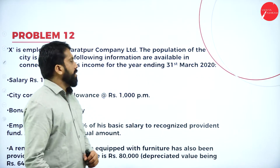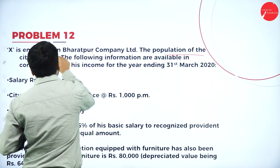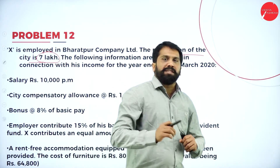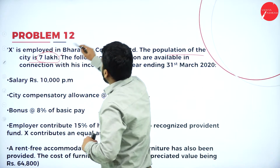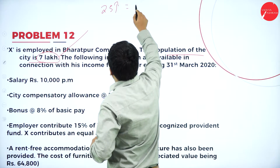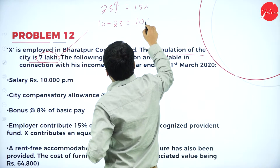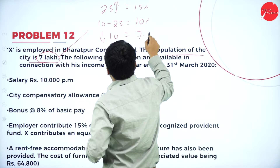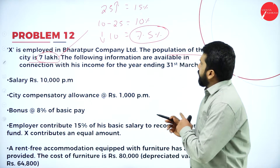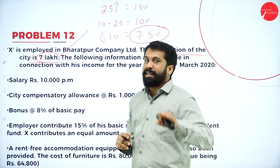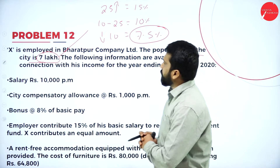X is an employee, employed in Bharatpur Company Limited. The population of the city is 7 lakh. If the population is 7 lakh, the calculation is: 25 lakh and above — 15%; 10 lakh to 25 lakh — 10%; and below 10 lakh — 7.5%. Since we have 7 lakh, which is less than 10 lakh, we go for the 7.5% calculation.